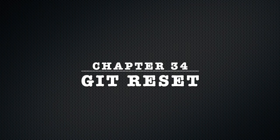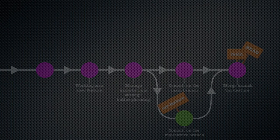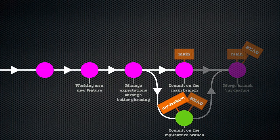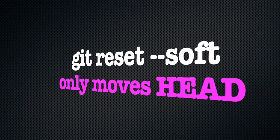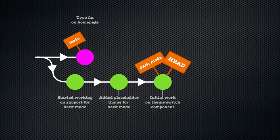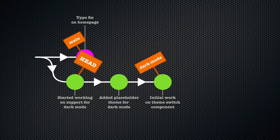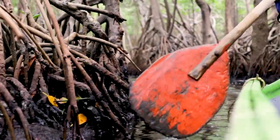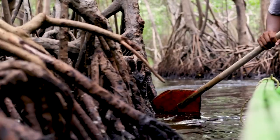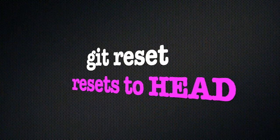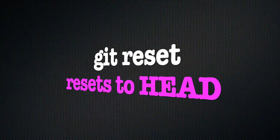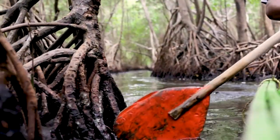Chapter 34: git reset. The git reset command allows you to reset to an earlier state of the DAG, or in its more gentle mode with the --soft flag, merely move the head label to a different spot than the tip of the branch. If you do not specify what to reset to, git assumes you want HEAD, so if you run this command without any arguments it will reset to the current HEAD.